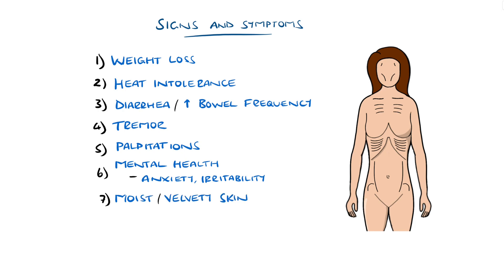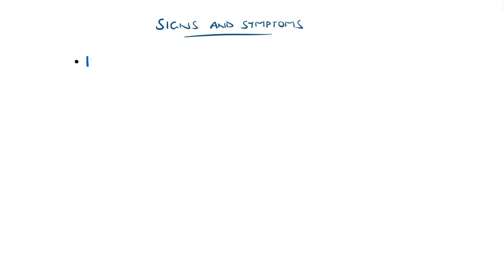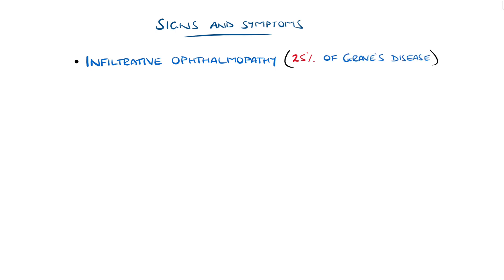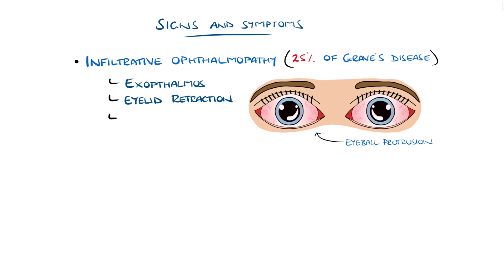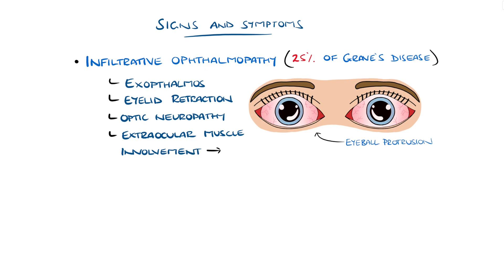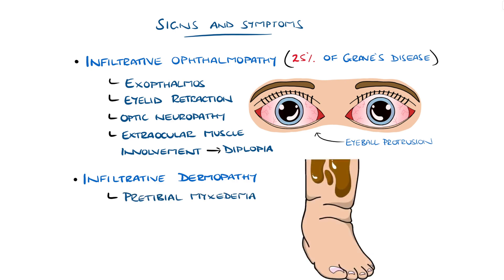Moist or velvety skin is another manifestation. In Graves' disease, there may be infiltrative ophthalmopathy, seen in 25% of patients, which can include eyelid retraction, exophthalmos (protrusion of the eyeball), optic neuropathy, or involvement of the extraocular muscles, which could manifest as diplopia (double vision). Infiltrative dermopathy features non-pitting edema in the pre-tibial region, called pre-tibial myxedema, and is also a finding suggestive of Graves' disease.